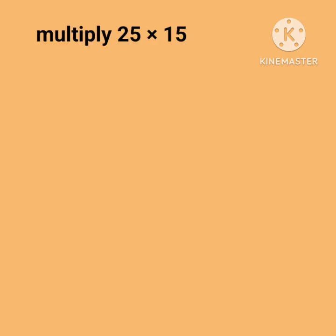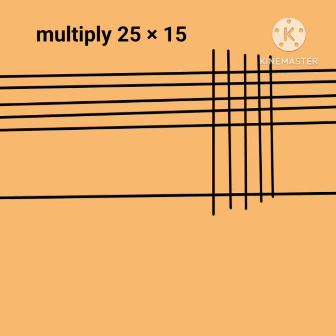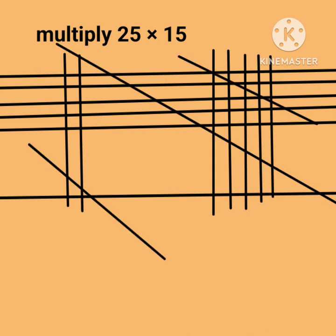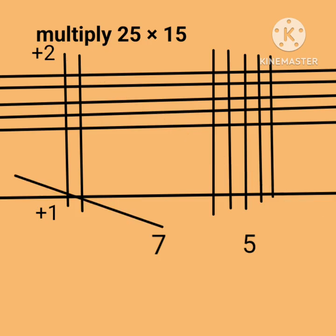Multiply 25 by 15. First draw 5 horizontal lines, then 1 only. Now draw 5 vertical lines first, then only 2. Now counting the points of intersections as shown in the diagram — this is found to be 25. Carry 2; total diagonal count is 15; adding carry we get 17. Write 7, carry 1. Finally next count is 2; adding carry 1 we get 3. So the final answer is 375.